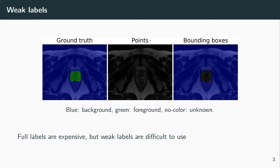In the case of point annotation, we have this patch of green pixels that we know belong to the foreground and for the rest of the image, it is unknown. It could be background, it could be foreground, but we actually don't know.